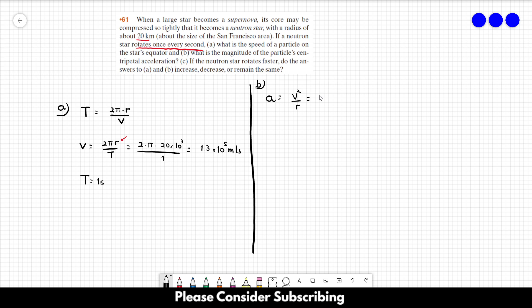So v squared would be 1.3 times 10 to the 5 squared, and the radius is 2 times 10 cubed.